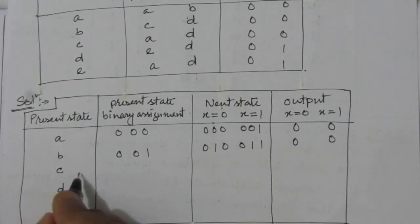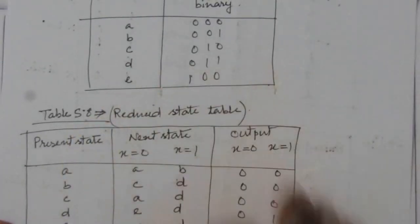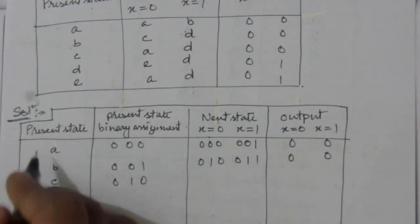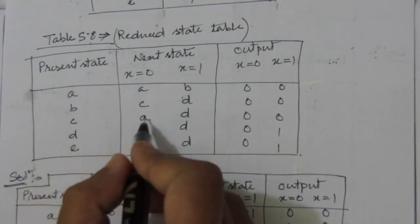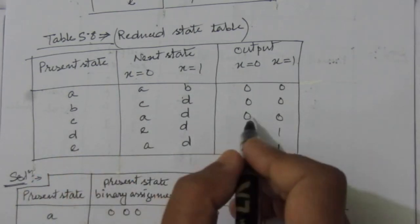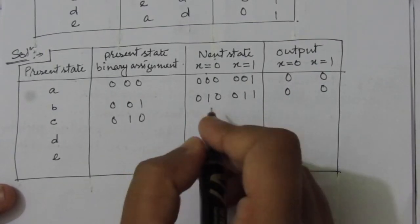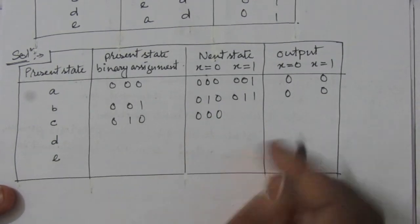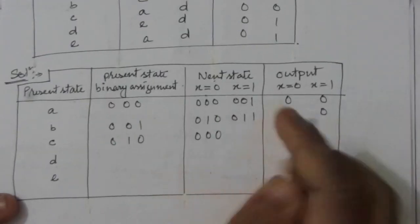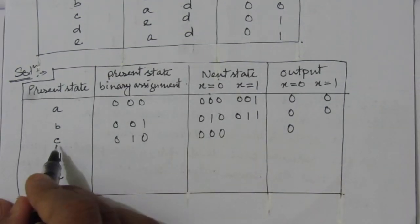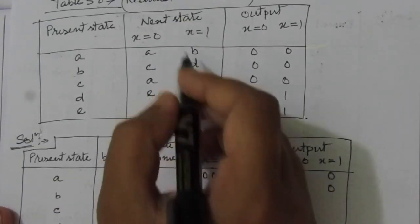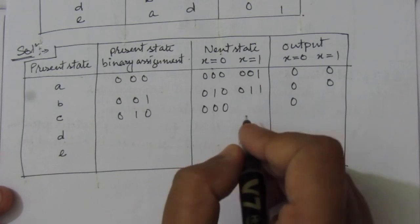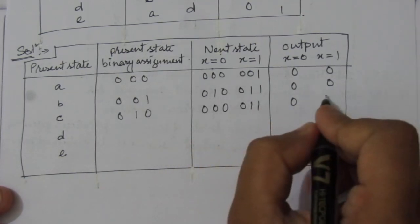Next, for present state C, the binary representation is 0, 1, 0. For present state C when input is 0, the next state is small a, which is 0, 0, 0, and the output is 0. When present state is C and input is 1, the next state is small d, with binary assignment 0, 1, 1, and the output is 0.